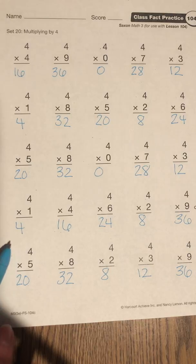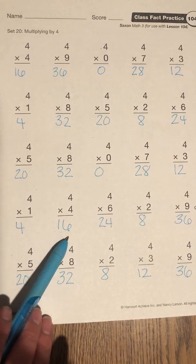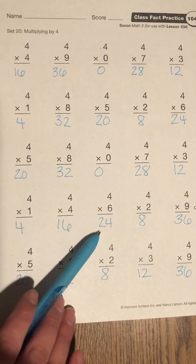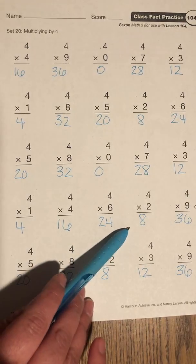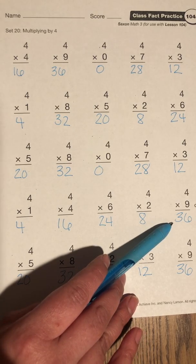Fourth row. 4 times 1 is 4. 4 times 4 is 16. 4 times 6 is 24. 4 times 2 is 8. 4 times 9 is 36.